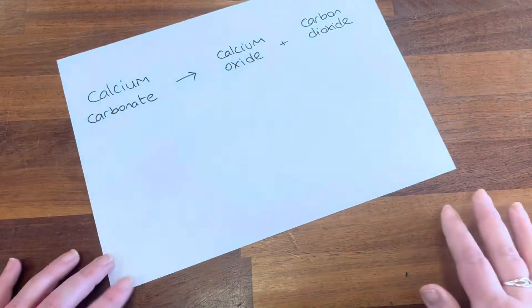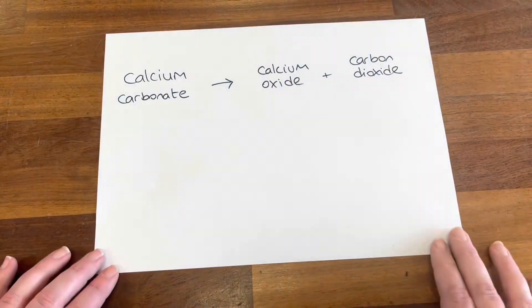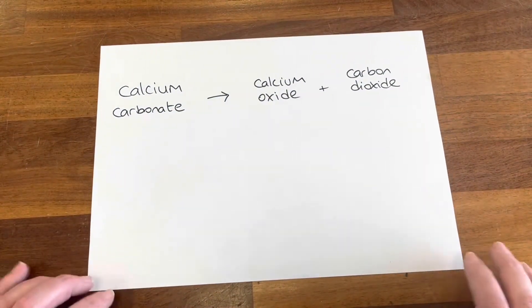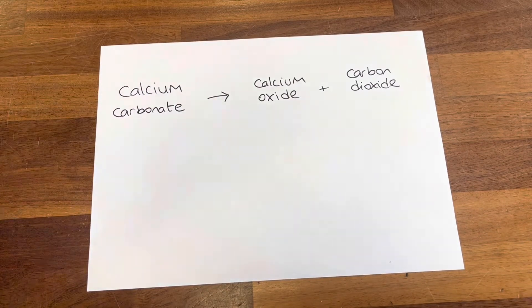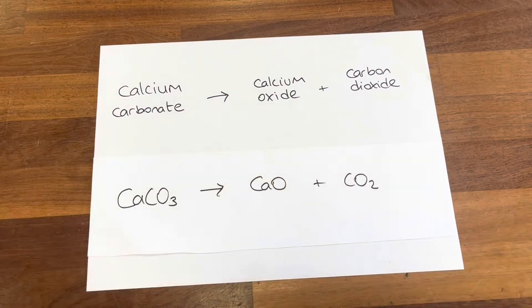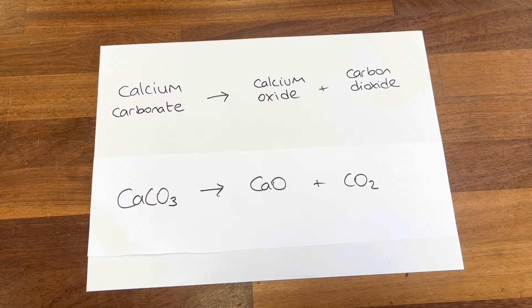In our second example we're going to look at what happens when calcium carbonate decomposes. Calcium carbonate is a white solid and when it decomposes it breaks down into calcium oxide and carbon dioxide. I'm going to show you the reaction that proves that carbon dioxide gas is produced.